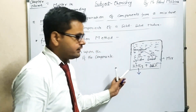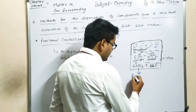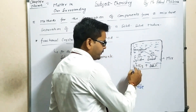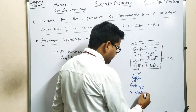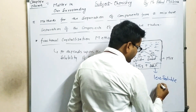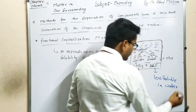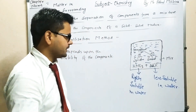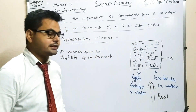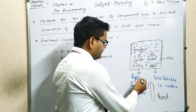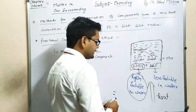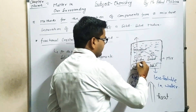The component KNO3, that is potassium nitrate, is highly soluble in water, and the component NaCl is less soluble in water. When we heat this mixture,